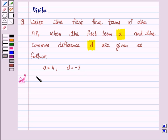Given A is equal to 4, that is our first term is 4, and the common difference D is equal to minus 3. Now we know that if A is the first term and D is the common difference